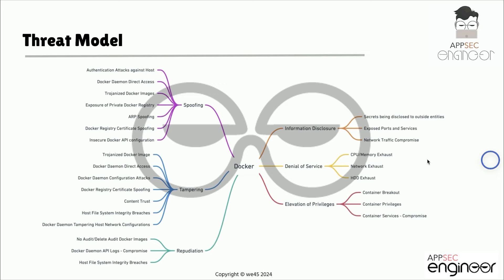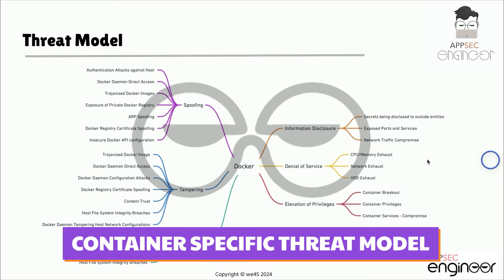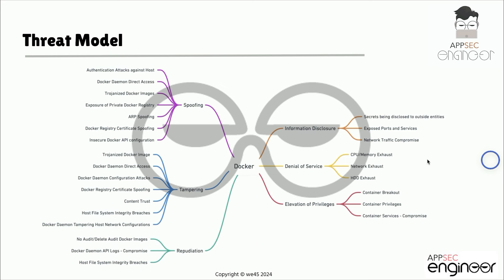From our previous sections we are now quite familiar with Docker. In this section we are going to focus on security and look at multiple ways to attack Docker containers and Docker implementations. We are first going to look at a container-specific threat model, then we are going to look at multiple attack vectors, after which we are going to have multiple labs where we attack Docker implementations and also analyze Docker images.